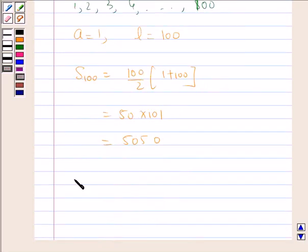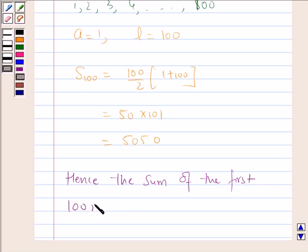So hence the sum of the first 100 natural numbers is 5050, which is required.